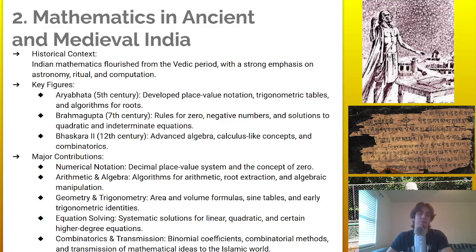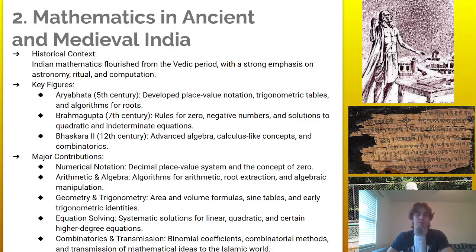Brahmagupta created rules for zero, negative numbers, and solutions to quadratic and indeterminate equations. Bhaskara II advanced algebra with calculus-like concepts and combinatorics. Major contributions of India include the decimal place-value system and the concept of zero, algorithms for arithmetic, root extraction, and algebraic manipulation.